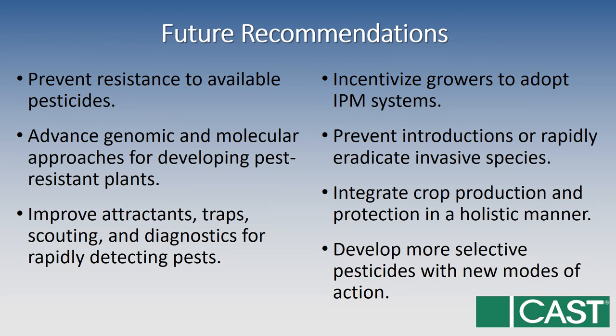We have future recommendations. We want to prevent resistance to available pesticides. We need to advance genomic and molecular approaches for developing pest resistant plants. We need to continue to improve attractants, traps, scouting, and diagnostics so that we can rapidly detect new invasive pests. We need to incentivize growers to adopt IPM systems, prevent introductions or rapidly eradicate invasive species, integrate crop production and protection in a more holistic manner, and develop more selective pesticides with new modes of action — especially in the area of herbicides and fungicides.